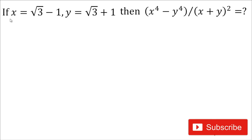Hello friends, welcome back. Here we will solve this algebraic problem: if x is equal to square root 3 minus 1 and y is equal to square root 3 plus 1, then we will have to find the value of x raised to the power 4 minus y raised to the power 4, divided by x plus y whole square.